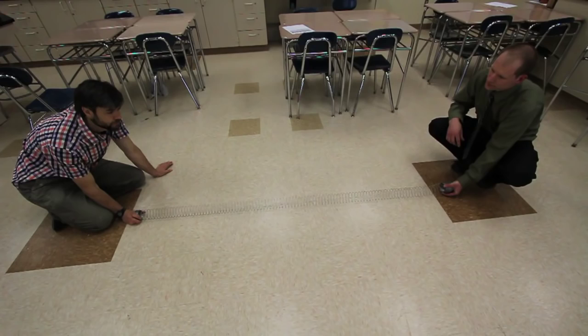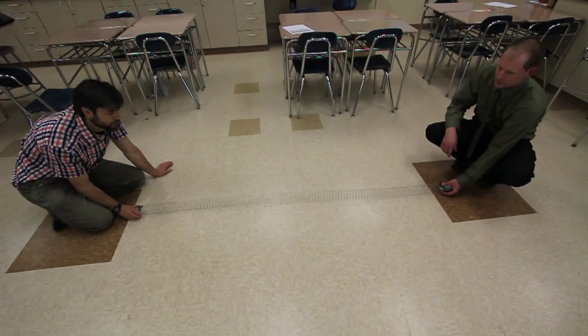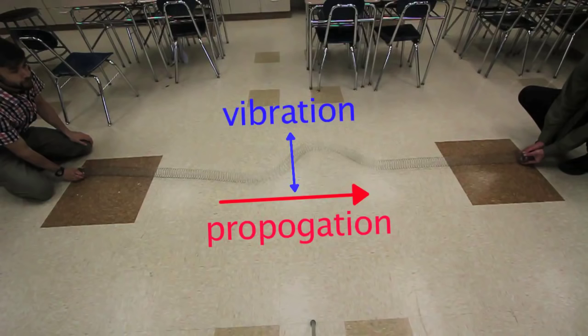If I produce a transverse wave, the propagation will be towards Mr. Peterson, but the displacement will be perpendicular to the propagation. Here we can see the transverse wave is propagating to the right, but the particle vibration is up and down, so that they are at right angles to one another.